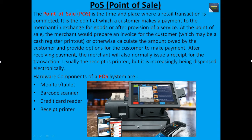Now we talk about POS. The point of sale is the time and place where a retail transaction is completed. It is the point at which a customer makes a payment to the merchant in exchange for goods or after provision of a service. At the point of sale, the merchant prepares an invoice for the customer, which may be a cash register printout, and calculates the amount owed and provides options for payment. After receiving payment, the merchant will normally issue a receipt for the transaction, which is increasingly being dispensed electronically. Hardware components of a POS system include monitor or tablet, barcode scanner, credit card reader, and receipt printer.